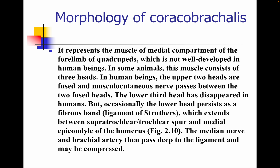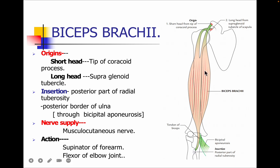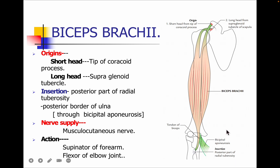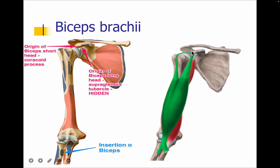The next muscle is the biceps brachii. Biceps means two heads: the short head and the long head. The short head originates from the tip of the coracoid process, while the long head originates from the supraglenoid tubercle. This muscle is inserted into the posterior part of the radial tuberosity. We also have the bicipital aponeurosis, which attaches to the posterior border of the ulna. The nerve supply is the musculocutaneous nerve. The actions are supination of the forearm and flexion of the elbow joint.